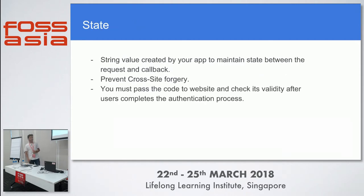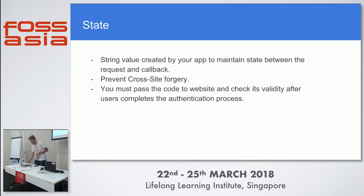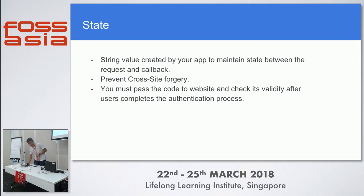The state parameter is an important part of the authorization process. Hackers can sometimes get involved and gain access to your data, so you want to implement a token or string which you can later validate to confirm that only the user granted access — no hacker in the middle. This prevents cross-site request forgery. You pass a code at the start, store it in a session variable, and validate it later.